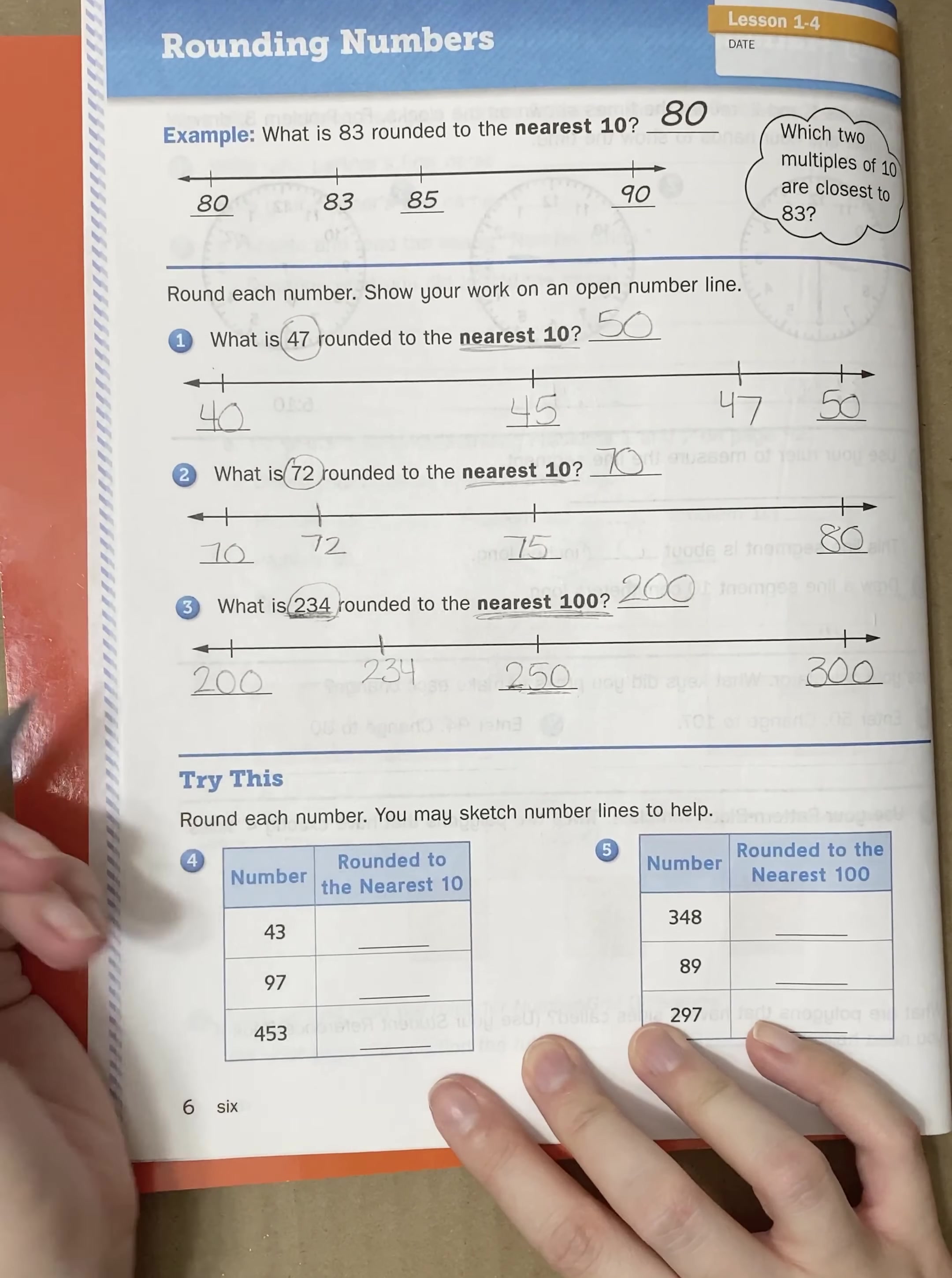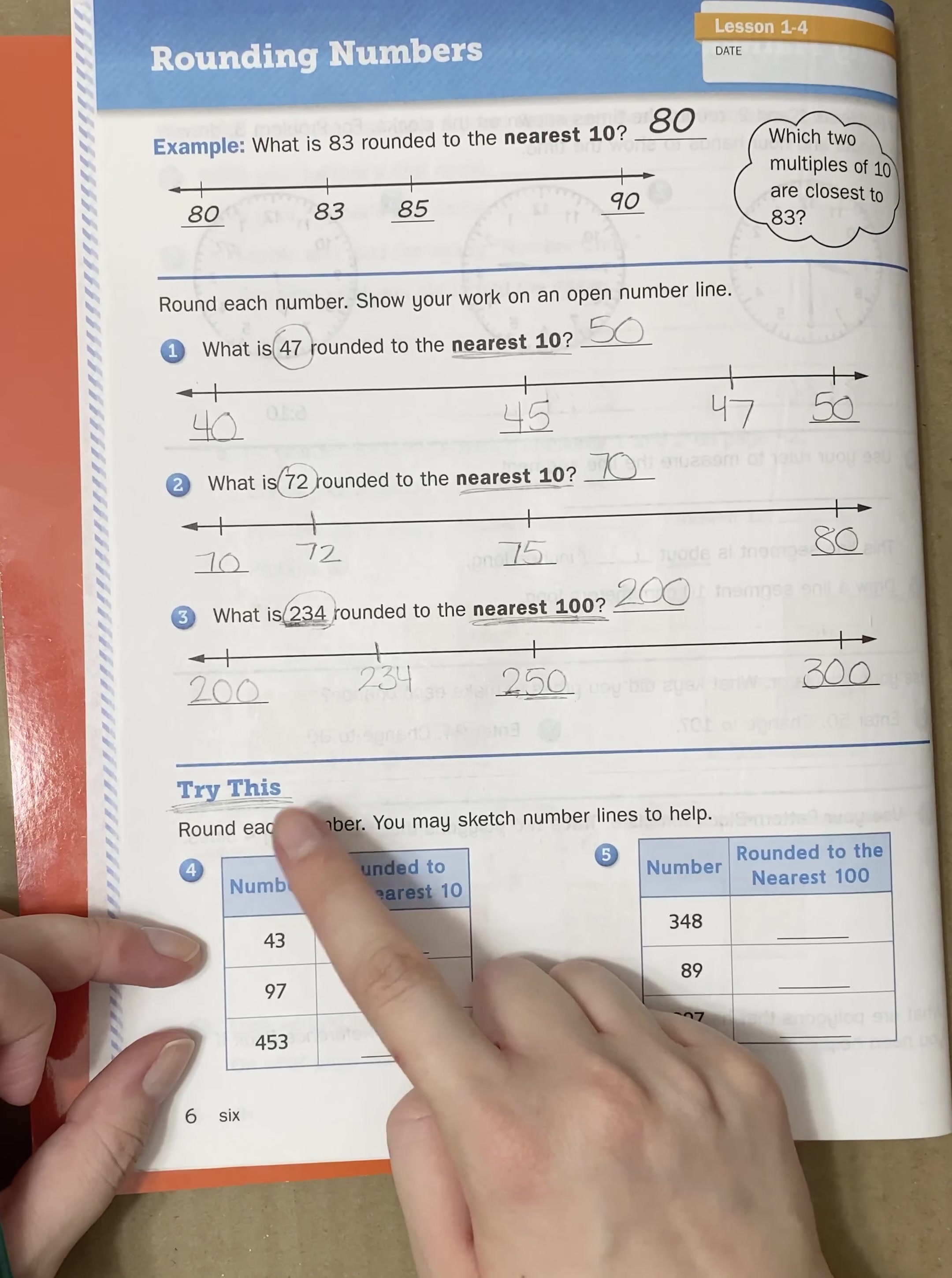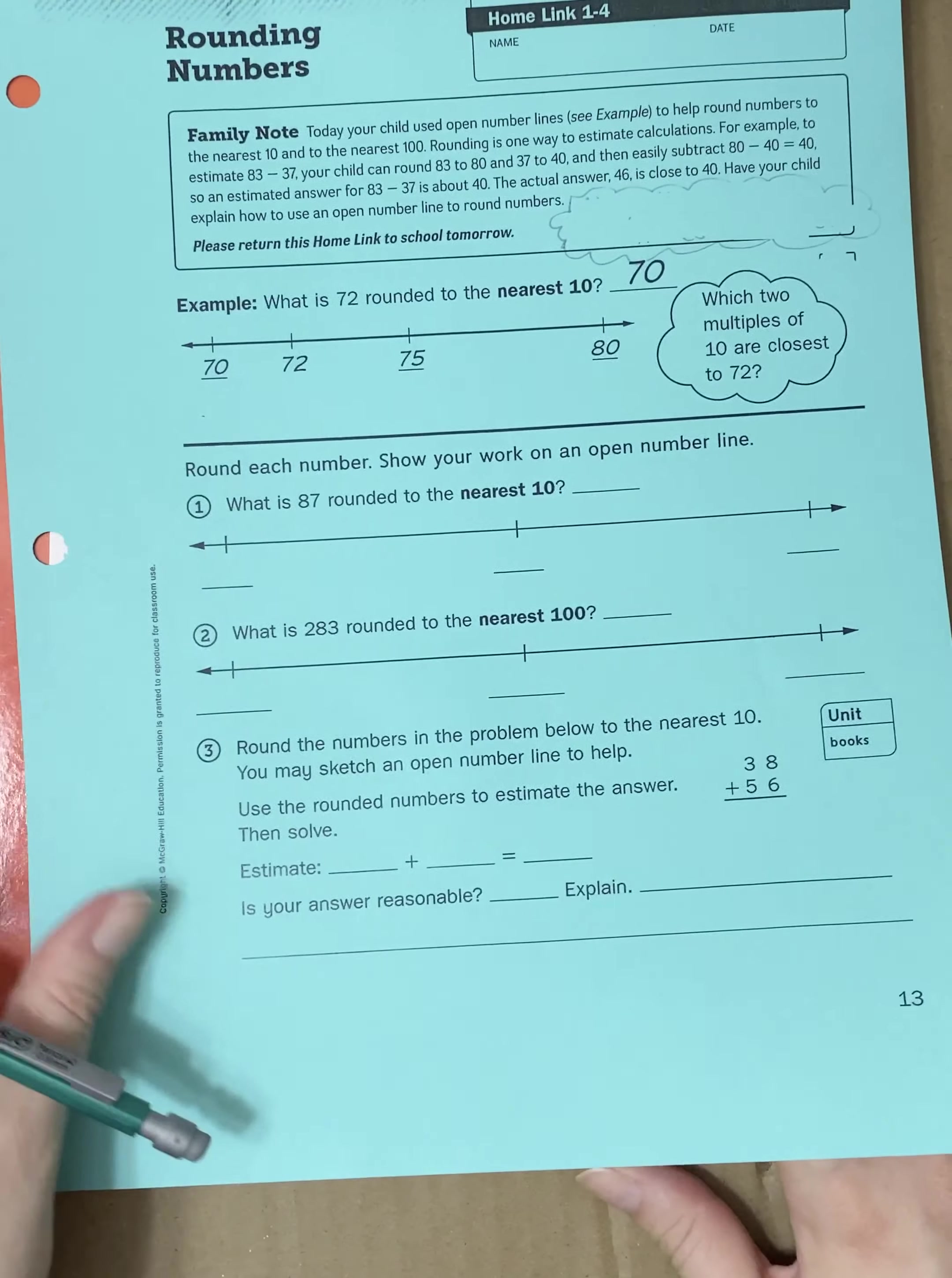If you look at numbers four and five, these are called try this. Which means, they're going to be a little step up higher than what we have been doing for practice. So, these may be a little bit more of a challenge. Try this means, do your best. It's not graded, but I want you to try to see how you do with these. Don't forget that the blue home link 1-4, called rounding numbers, is the paper that you're going to do for homework and upload to Google Classroom. I will see you guys at office hours.